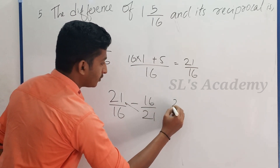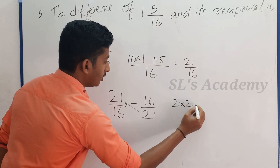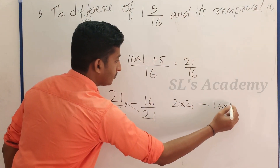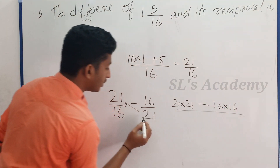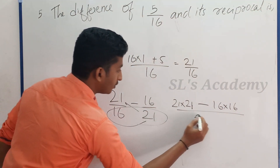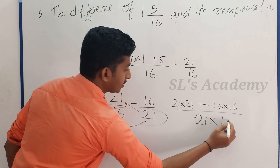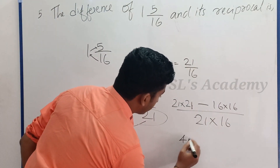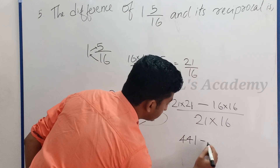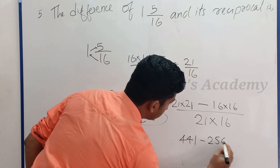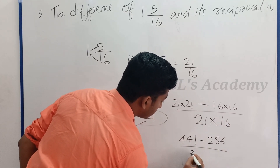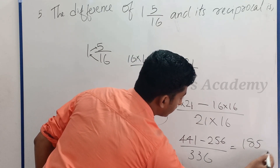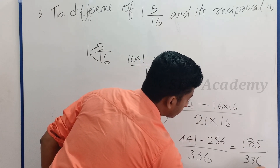21 into 21 minus 16 into 16, divided by 21 into 16. That gives 441 minus 256 by 336, which equals 185 by 336. That's the answer.